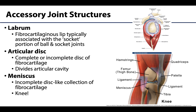Articular discs are more substantial pads of fibrocartilage located within the articular cavity, and they typically serve to divide the space within the joint, compartmentalizing the actions that can occur there. The classic example is the articular disc of the temporomandibular joint, or TMJ, but there is also an articular disc in the acromioclavicular or AC joint.